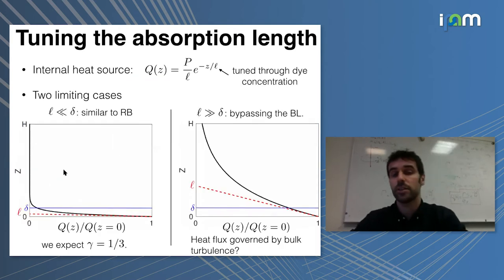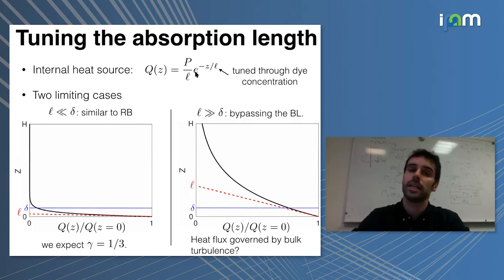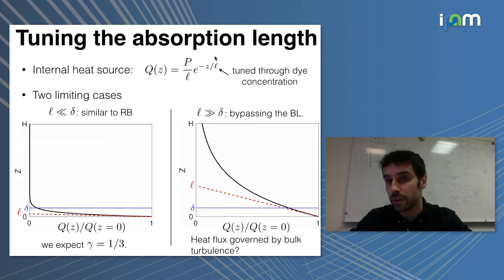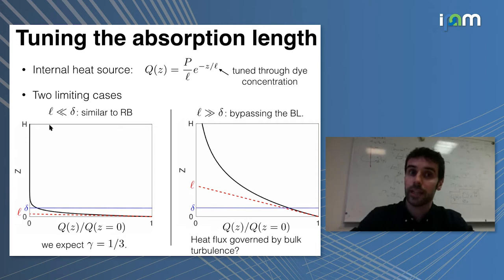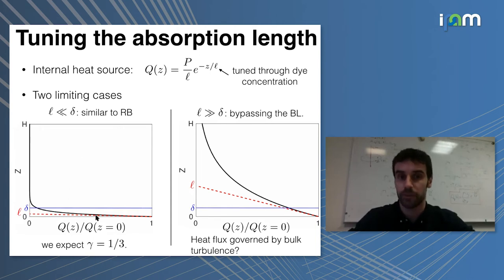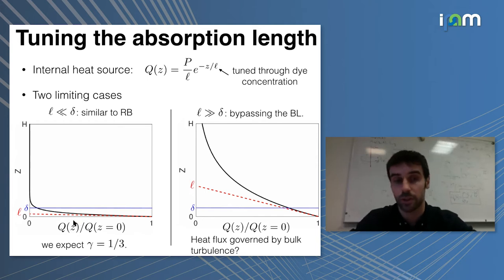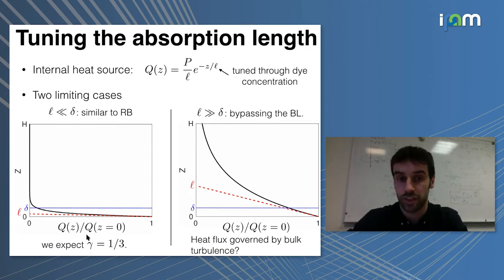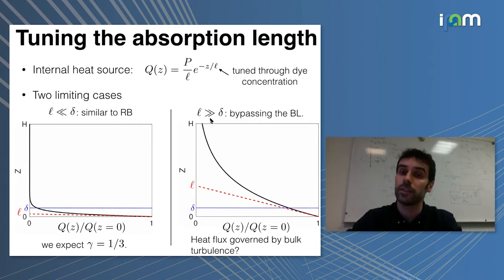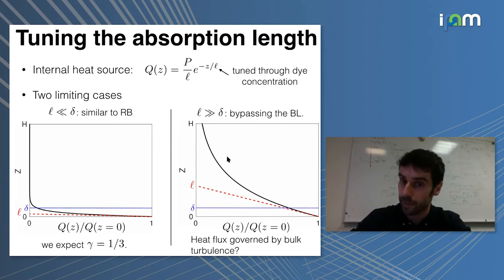I'll focus on two limiting cases. The internal source term is an exponential that decreases with the vertical coordinate Z over the height L. The first case is when L is much less than the boundary layer thickness — we're inputting the heat very near the boundary, directly inside the boundary layer. This heat still has to be diffused across the boundary layer, just like in a standard Rayleigh-Bénard setup, so we expect results similar to Rayleigh-Bénard with γ close to one-third. More interestingly, I'll consider L much greater than the boundary layer thickness δ, inputting heat directly inside the bulk turbulent flow, bypassing the boundary layer.